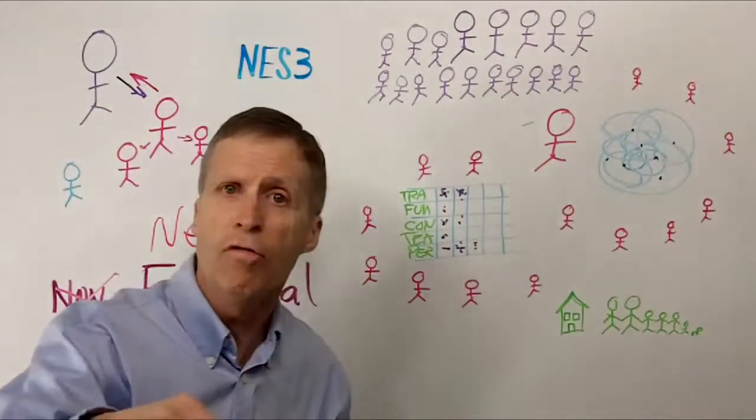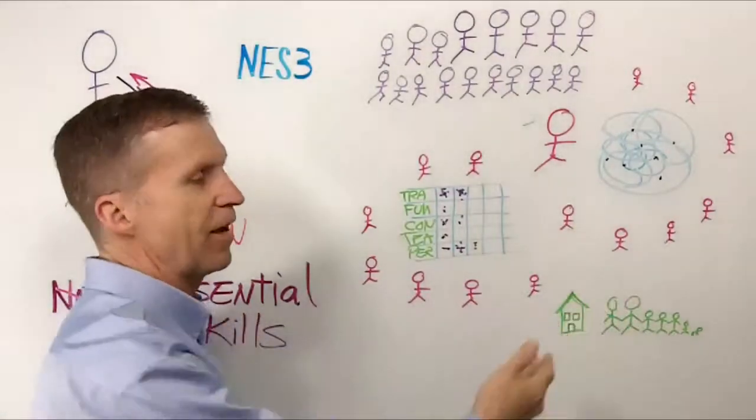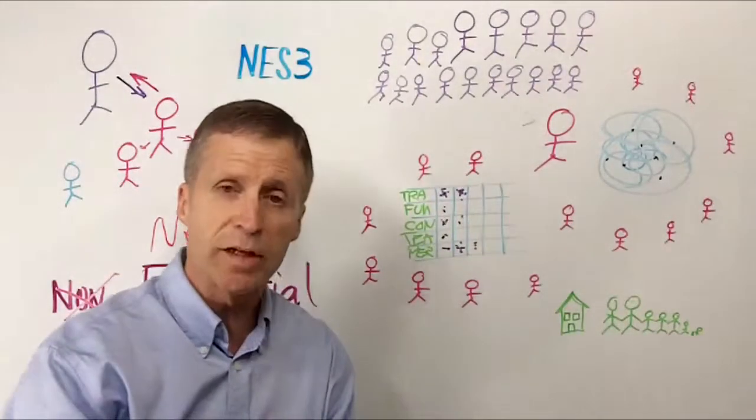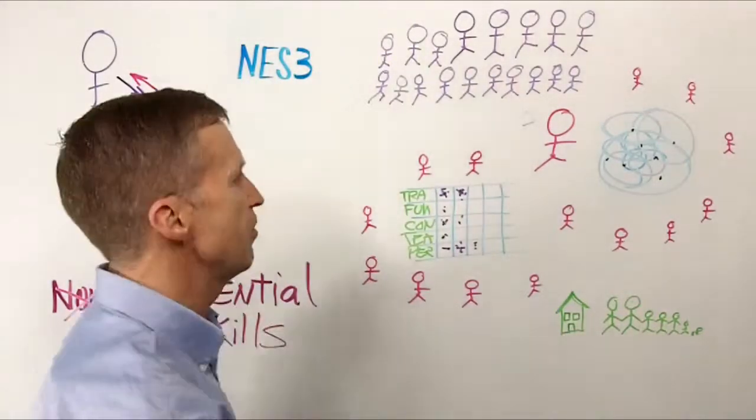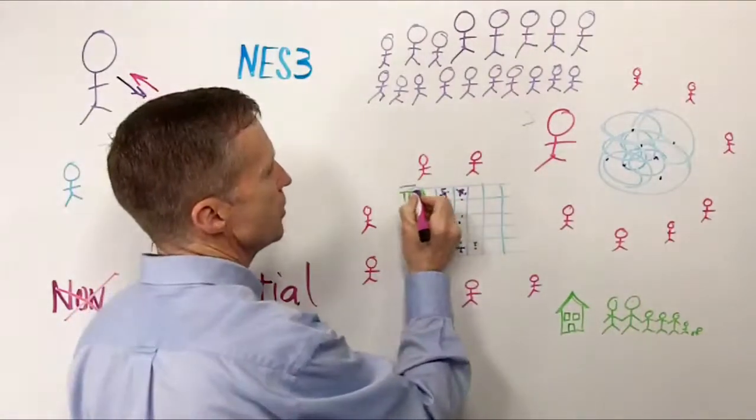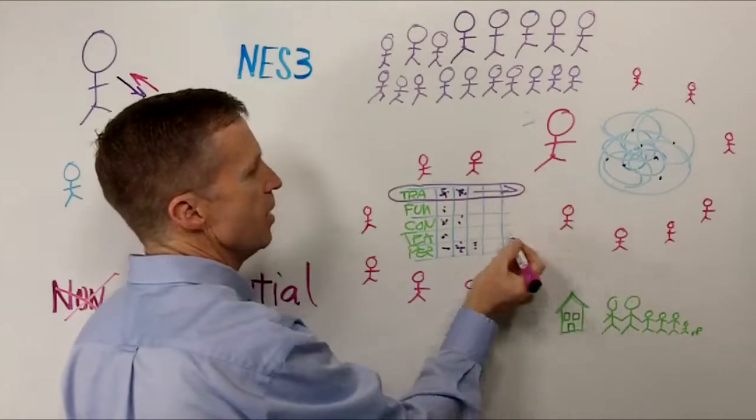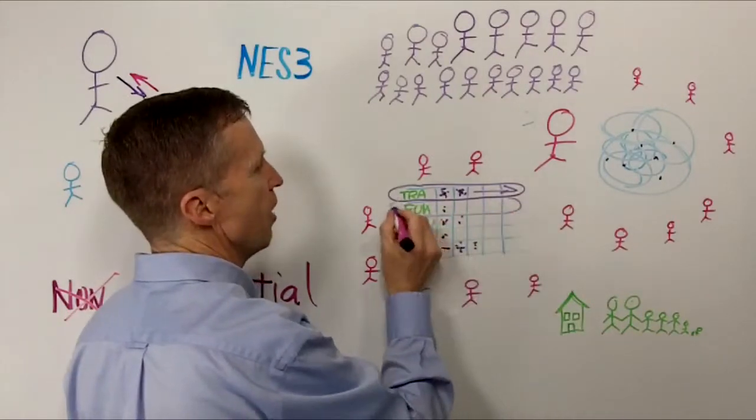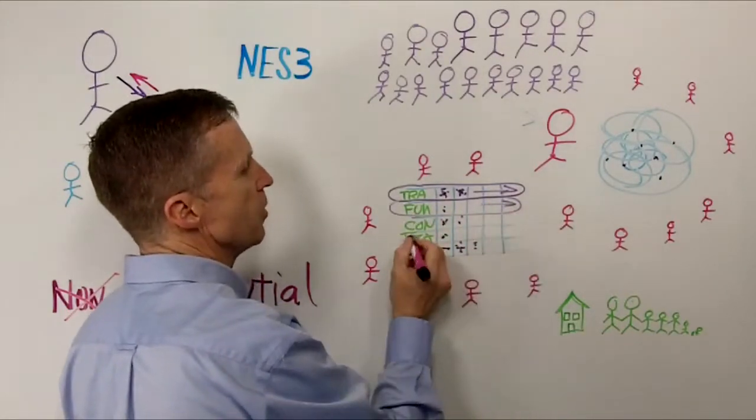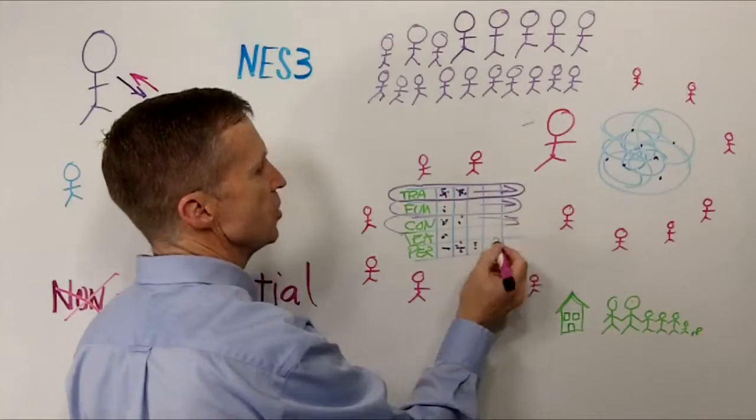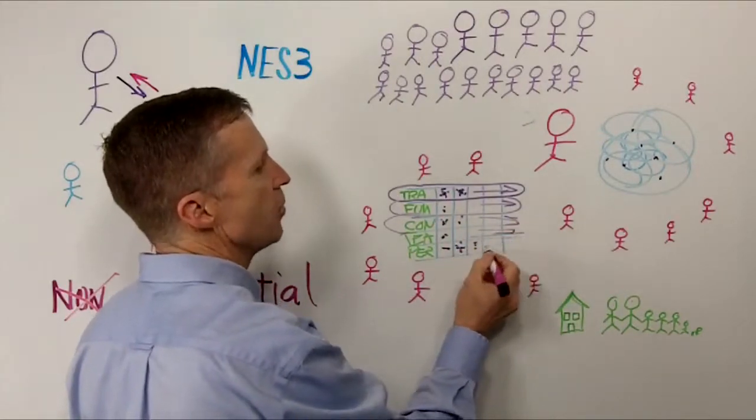When the event's over, we go home back to our family and our house. Guess what we can do? We can take that same information and we can compress it and all of a sudden we can put a mastery course together on traffic. We can put a mastery course together on funnels, conversion, team building, and personal development.